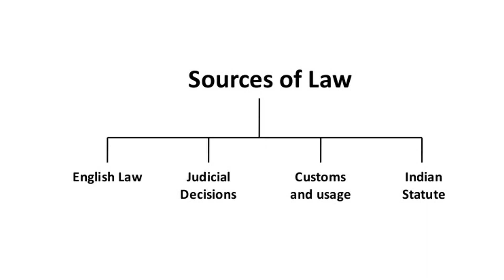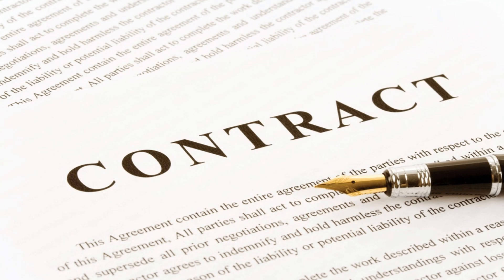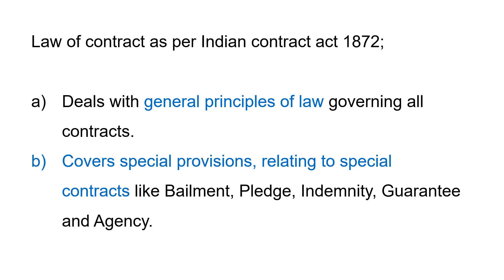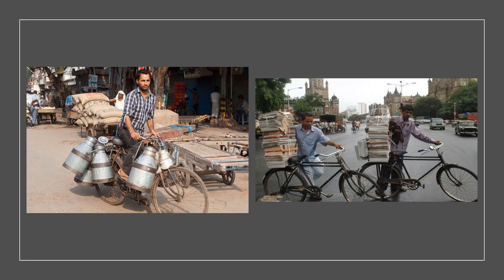The law of contract, as per the Indian Contract Act 1872, deals with general principles of law governing all types of contracts. It also covers special provisions relating to special contracts like bailment, pledge, indemnity, guarantee, and agency.